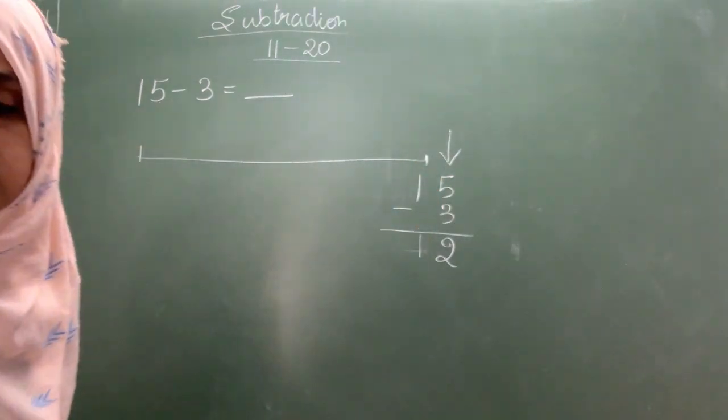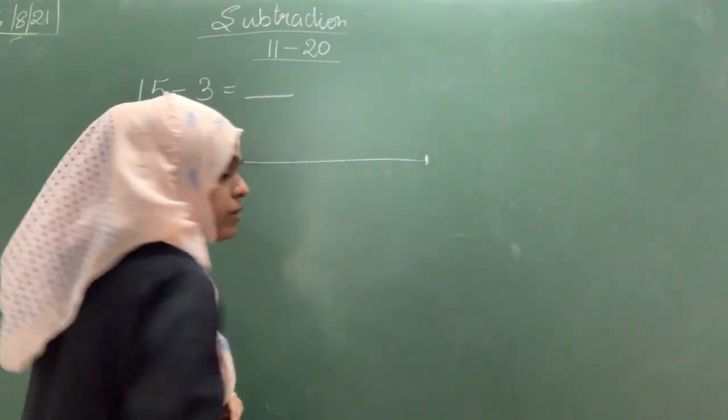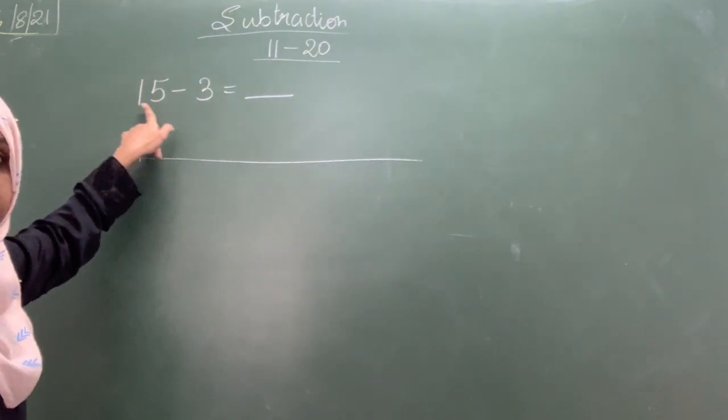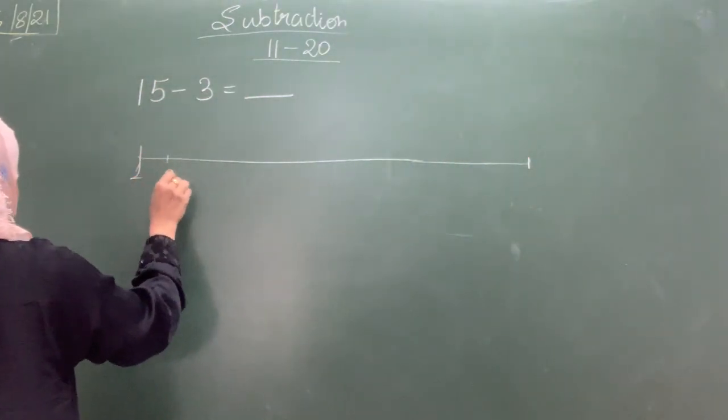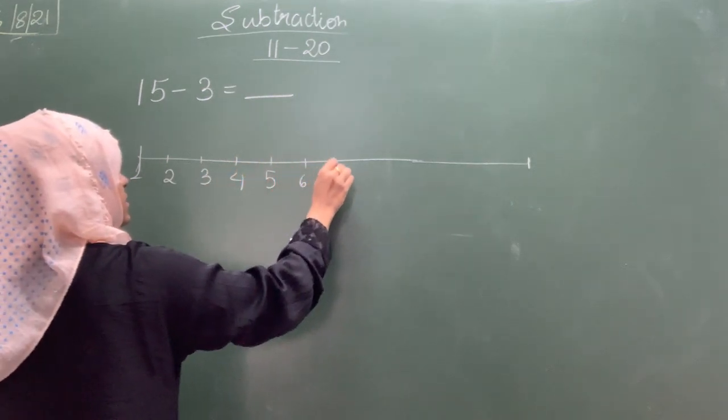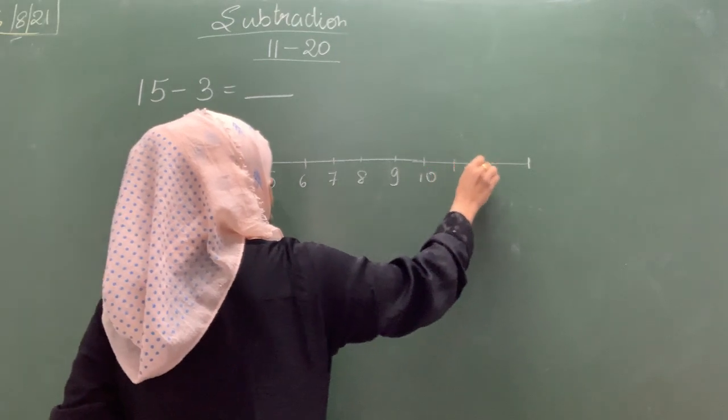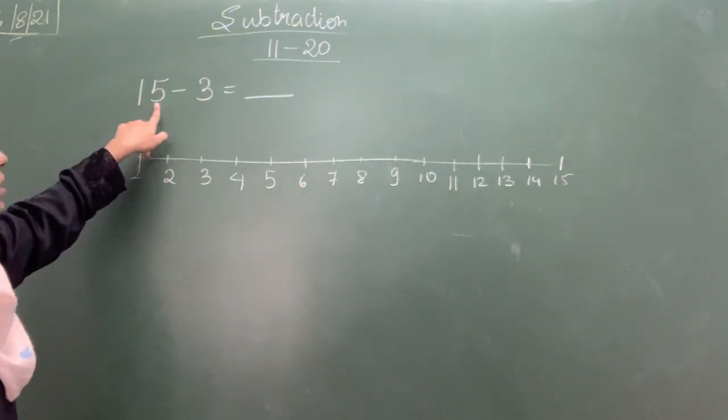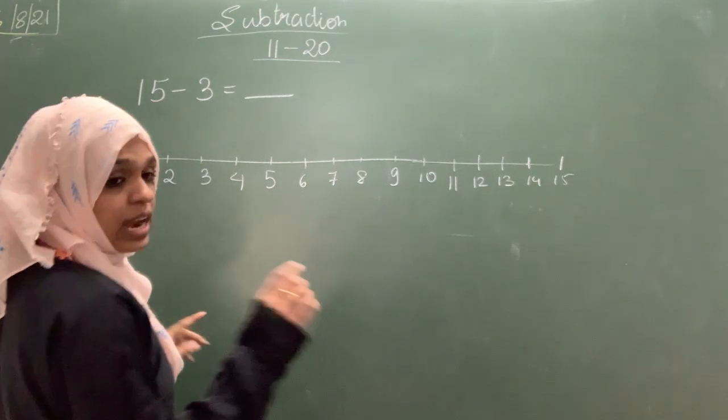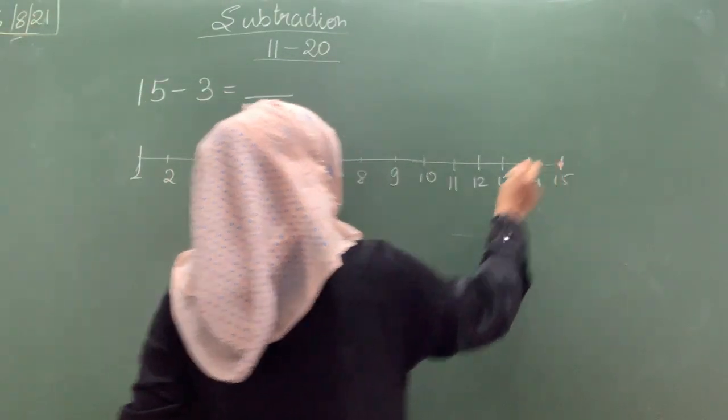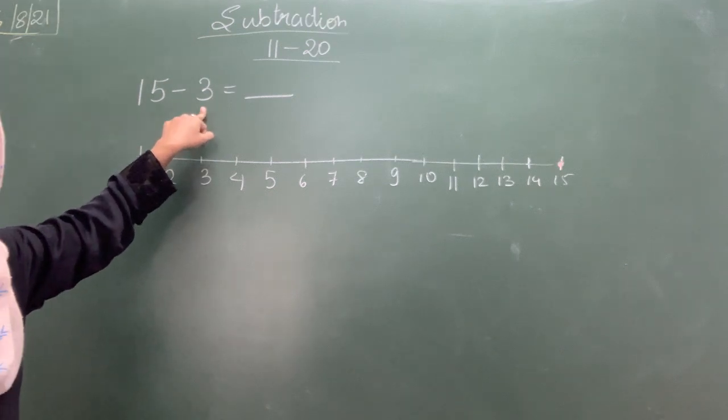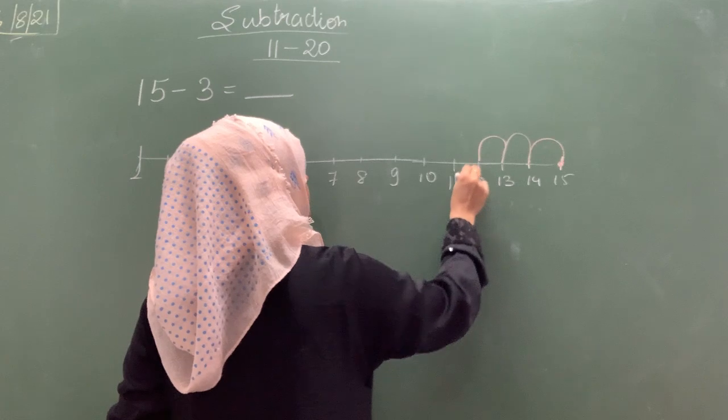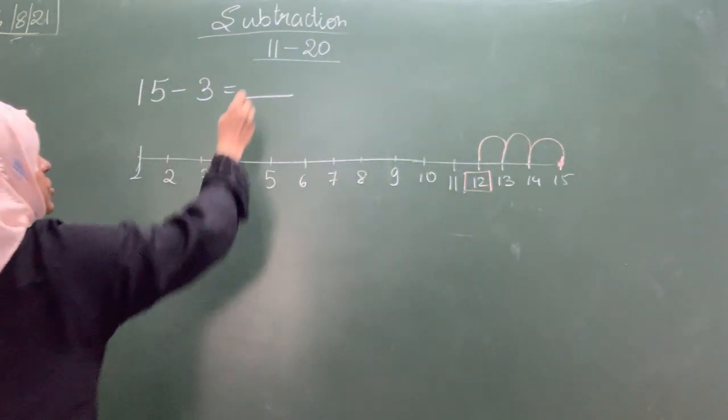15 minus 3. So I will start the number from 1 till the number we can take till 15. We don't have to go to 20 because we are going to start the number 15. So I will take 1, 2, 3, 4, 5, 6, 7, 8, 9, 10, 11, 12, 13, 14, 15. So I will take till 15 because I am going to start from here. So mark the starting point, that is 15. What was the next step? 3 steps you have to take. Which side? Backwards. In minus you have to go behind. So 1, 2, 3. What is the answer you got? 12. So your answer is 12.